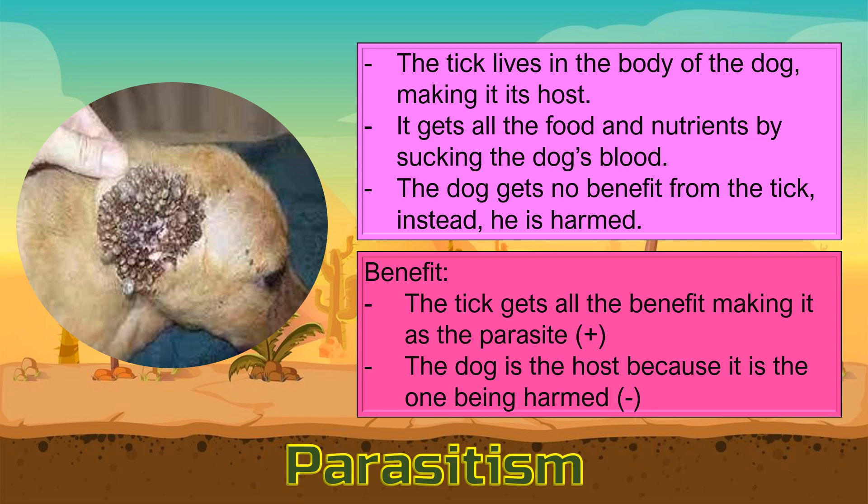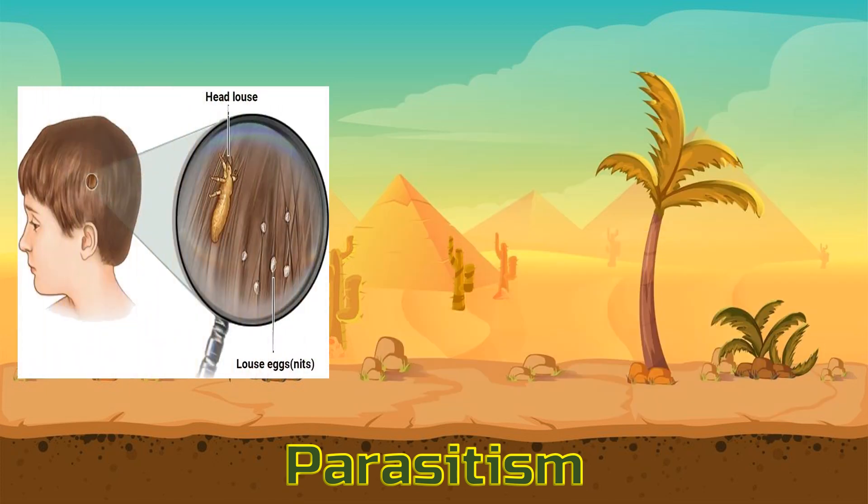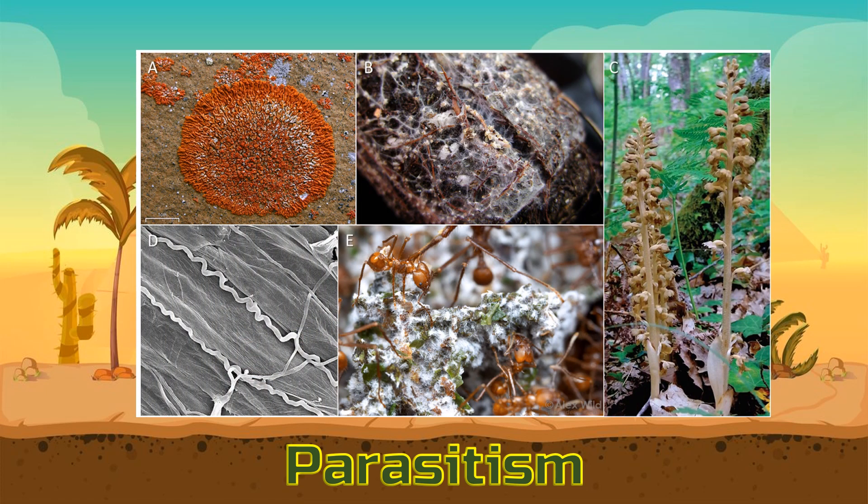Sa halimbawang ito, ang aso ay ang host at ang parasite naman ay ang garapata. Nakikitira ang garapata sa katawan ng aso at kumukuha siya ng kanyang pagkain at sustansya sa pamamagitan ng pagsipsip sa dugo ng aso. Ang aso naman ay walang nakukuha kahit anong benepisyo galing sa garapata. Other examples would be the lice, and many more.